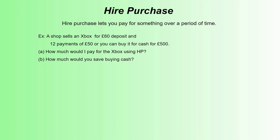Welcome to High School Maths. Today we're going to be looking at hire purchase, which is a method of paying for goods over a period of time rather than paying the whole amount upfront. We've got an example here: a shop selling an Xbox for a £60 deposit plus 12 payments of £50, or you can buy cash for £500. We're going to start off with how much you'd pay using hire purchase. The numbers are kept simple so this can be a non-calculator or calculator question.